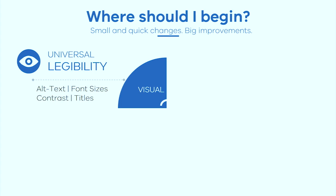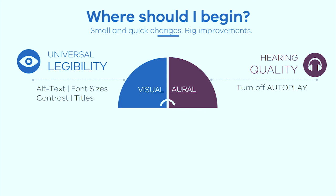For hearing impairments in reporting, the main thing to consider is turning off autoplay on any embedded media, since sudden loud noises can cause serious adverse reactions for some people.